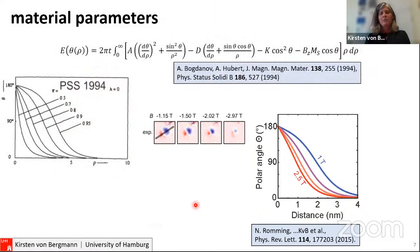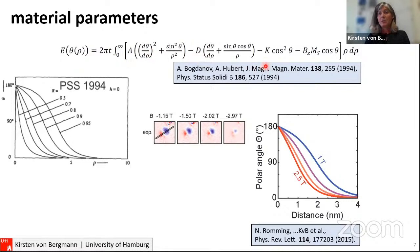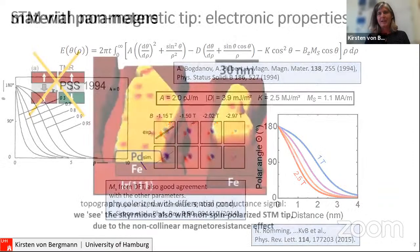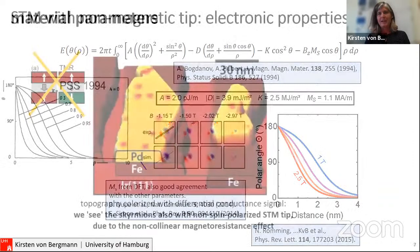This looks very similar to what was proposed long ago using this energy functional. With all this information, we can derive material parameters directly from our experimental data — inputting the saturation magnetization, then deriving the exchange stiffness, Dzyaloshinskii-Moriya interaction strength, and uniaxial anisotropy. Putting these back into a simulation code gives very nice agreement with our experimental data. SP-STM seems to be a very useful tool to characterize such skyrmion materials.